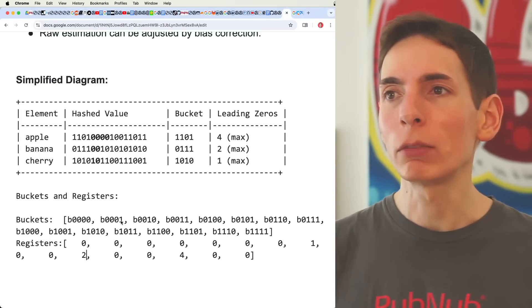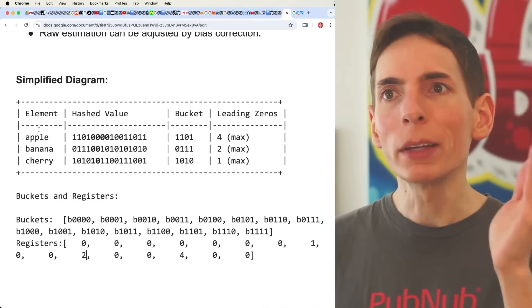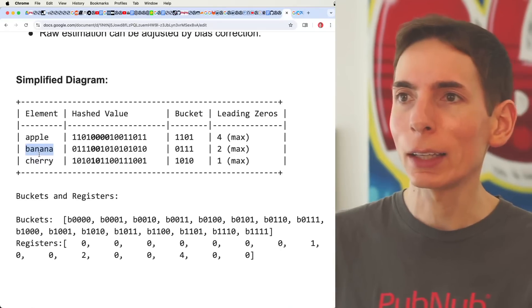So for example, let's actually just walk through. So we've got three elements here - apple, banana, and cherry. Fruit. I love fruit. Fruit's fantastic.